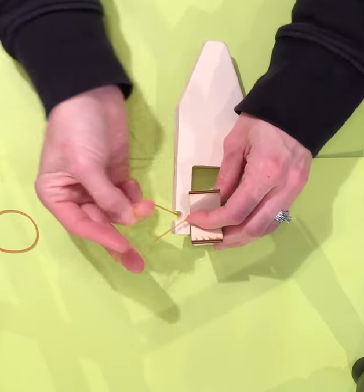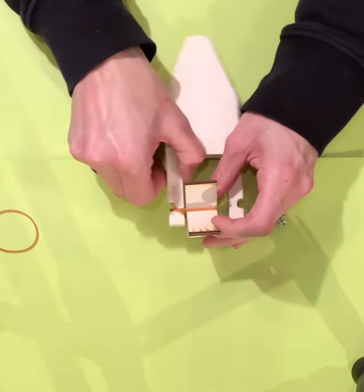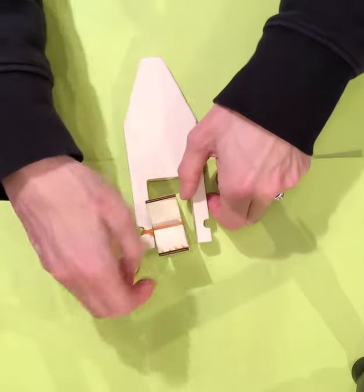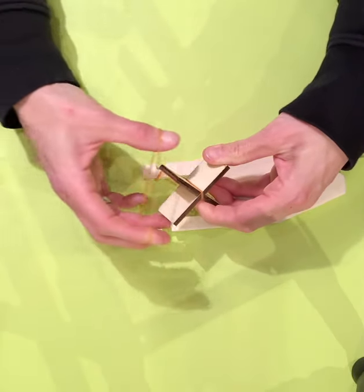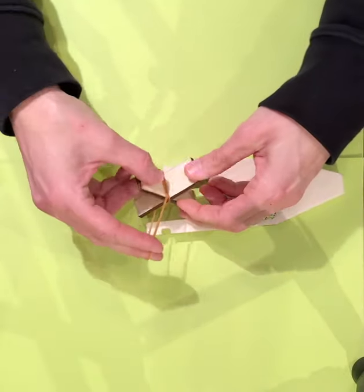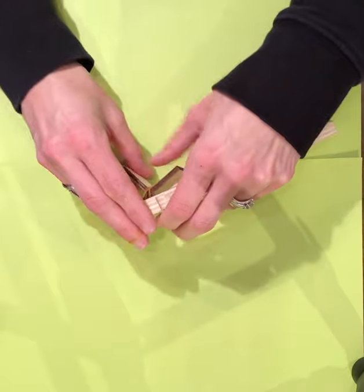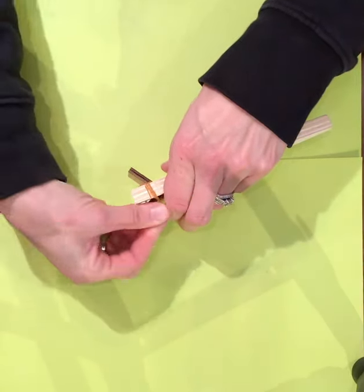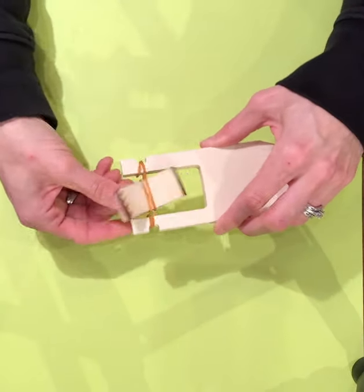You're going to twist it around one time and attach it right in that little notch. I'm going to do the same thing to the other side—stretch out the paddle, put the rubber band around it, and wrap it around that notch one time. That will secure the paddle pretty good, so it's not going to come out.